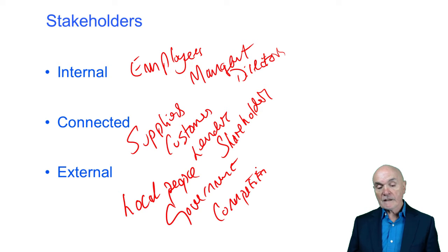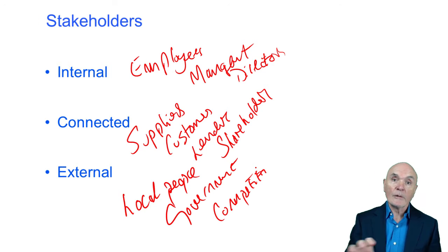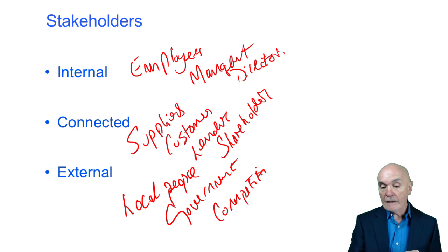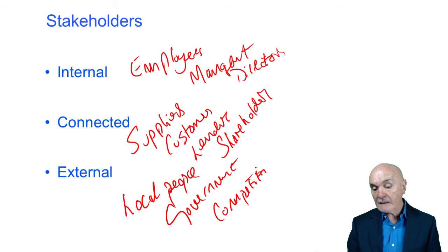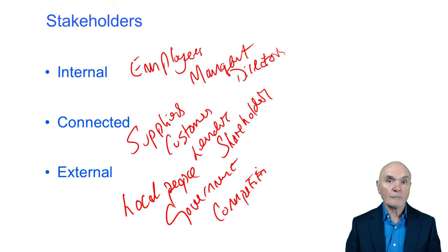So these are the internal, connected, and external stakeholders. For the exam you should be able to say, for example, that an employee is internal, the bank is connected, and so on. You may have to match them up in some way.